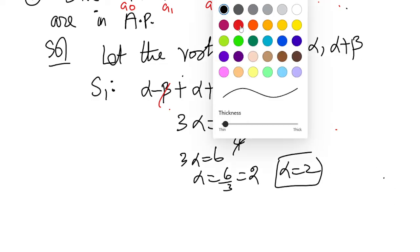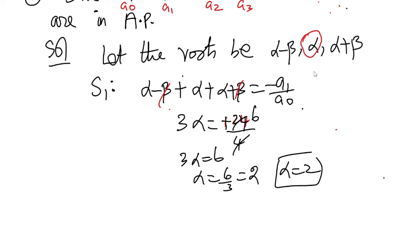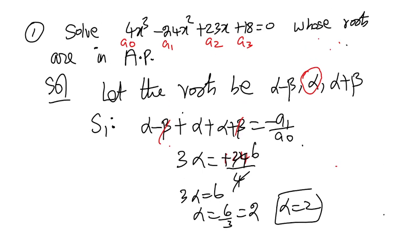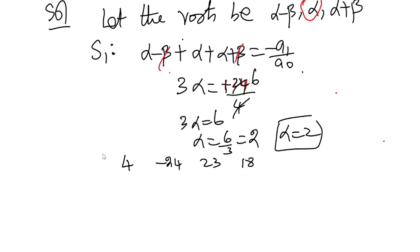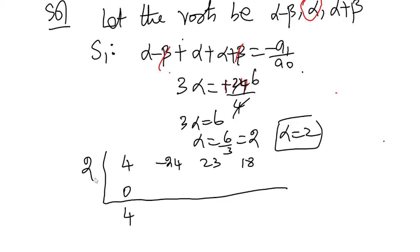Alpha equals 2, so 2 is one of the roots. Since alpha is one of the roots of the given equation, we can divide using synthetic division with divisor 2. Coefficients are 4, -24, 23, 18. Bring down 4. 2 into 4 is 8; minus 24 plus 8 is minus 16. 2 into minus 16 is minus 32; 23 minus 32 is minus 9. 2 into minus 9 is minus 18.